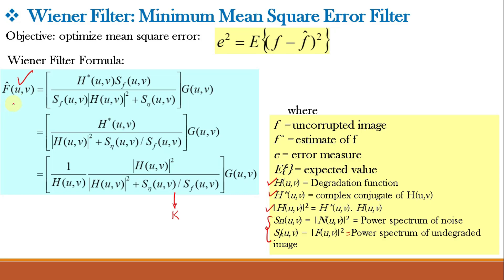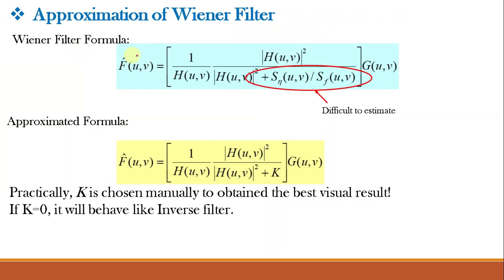Using trial and error, we assume different values of K to obtain F̂(u,v) as a close estimate of F(u,v). If K equals 0, the K term cancels and the Wiener filter reduces to a simple inverse filter — 1/H(u,v). In practice, K is chosen manually to obtain the best visual result. This approximated formula is the one used in implementation.